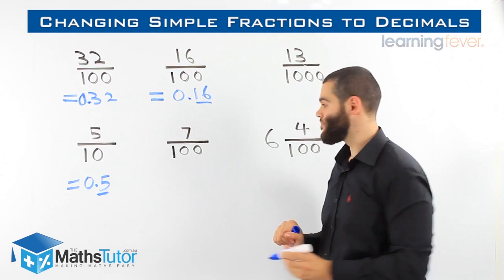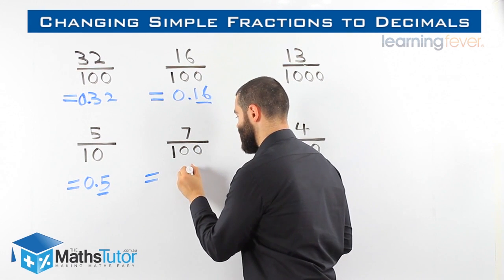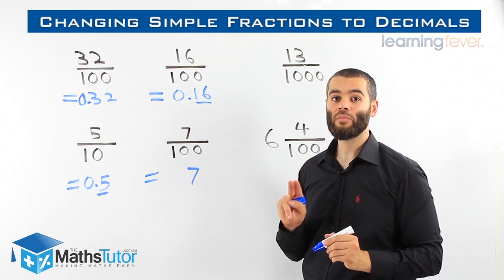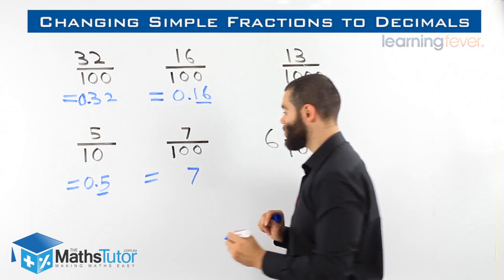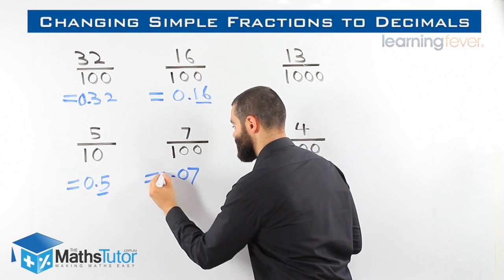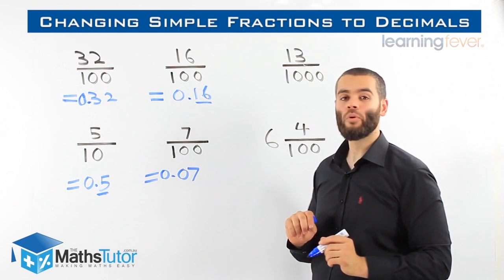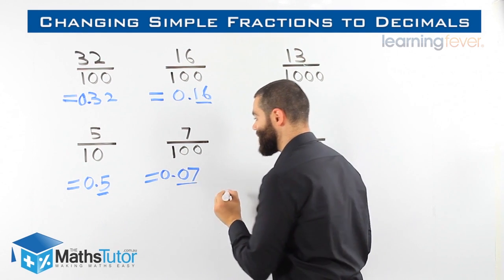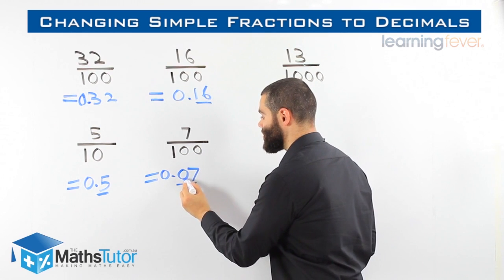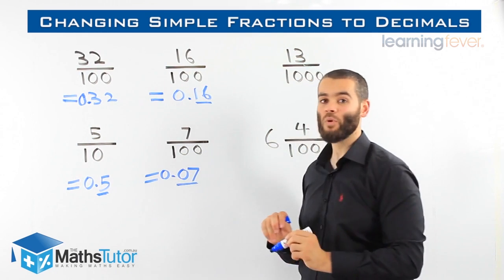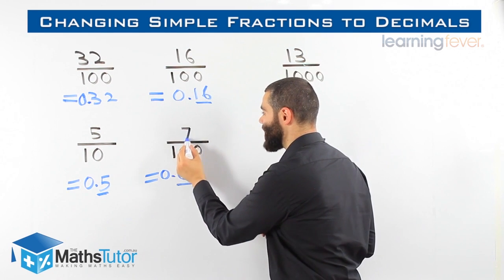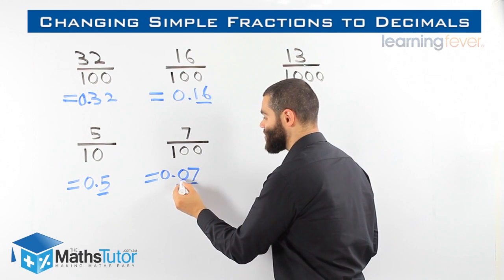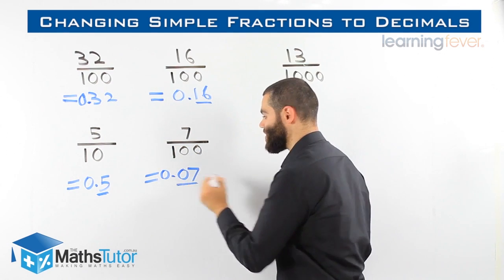7 over 100. We write our 7, and we know there are two zeros, which means there are going to be two numbers after the decimal point: 0.07. Be careful — 0.07. Another way we can tell is that it's 7 out of 100; we have the tenths place here and the hundredths place here. 7 out of 100 — there it is. Very easy.